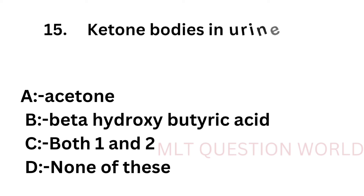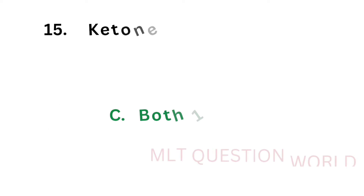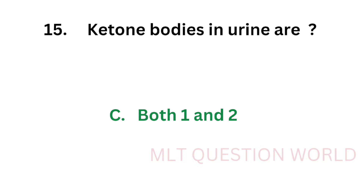Question number 15: Ketone bodies in urine are — option A: Acetone, option B: Beta-hydroxybutyric acid, option C: Both 1 and 2, option D: None of these. Ketone bodies are acetone, acetoacetic acid, and beta-hydroxybutyric acid. So the correct answer is option C, both 1 and 2 — that means both A and B.